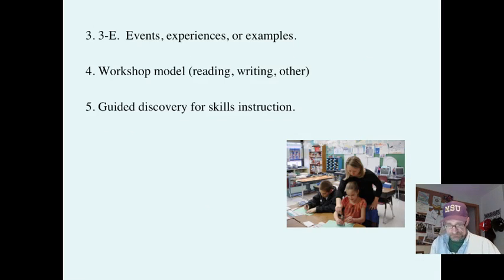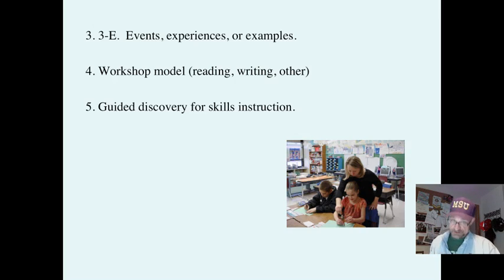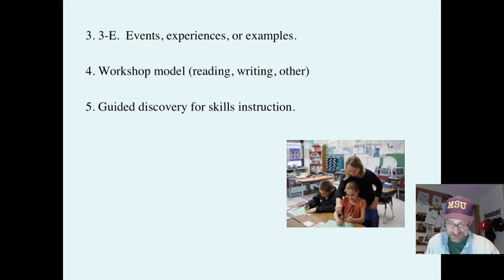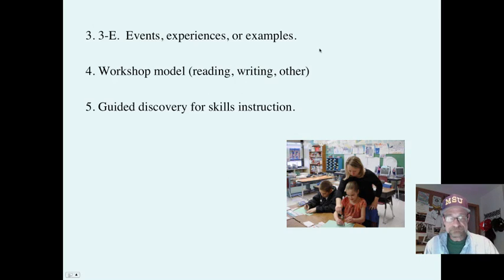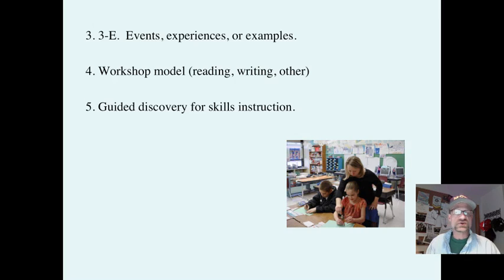Another type of guided discovery learning is 3E, where you have an event, an experience, or an example. You have a planned series of events, experiences, or examples. Students note the common elements with each experience, and the list grows until a concept evolves. An example would be to present a series of amphibians — as you give examples of various amphibians, students are asked to list defining features or characteristics, and then see if they can come up with a concept of what an amphibian is.